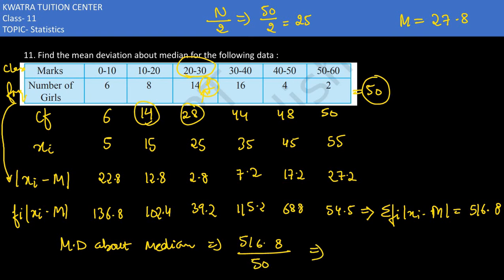Now dividing both the numbers, you would get 10.336 as the answer. Mean deviation about the median.